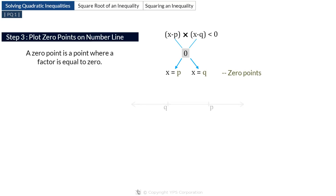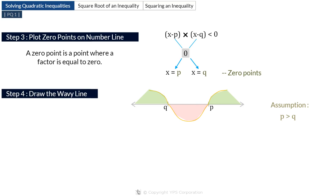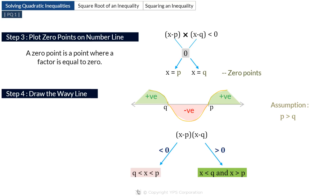We plot p and q on the number line, assuming p is greater than q. These two zero points divide the number line into three zones. Starting from the top right of the number line, draw a wavy line passing through both zero points. The inequality is positive where the wavy line is above the number line and negative where it is below. So if we want (x minus p)(x minus q) less than 0, the answer is q less than x less than p. If greater than 0, then x less than q or x greater than p.